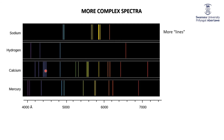More spectral lines means more transitions — you can't explain them with just first shell, second shell, third shell, fourth shell. The model adopted is one in which shells are split into sub-shells. For example, the third shell has three sub-shells, so instead of one transition from the first shell to the third shell, you can have three transitions — one to each sub-shell. That accounts for more lines in the spectrum.